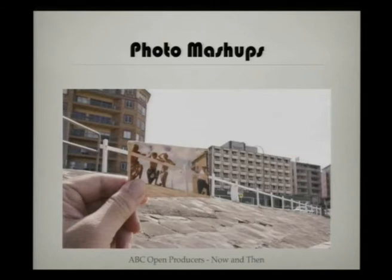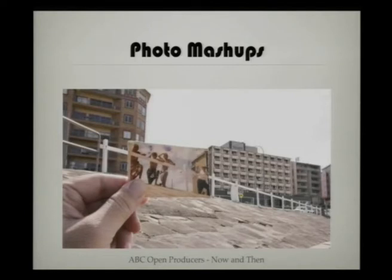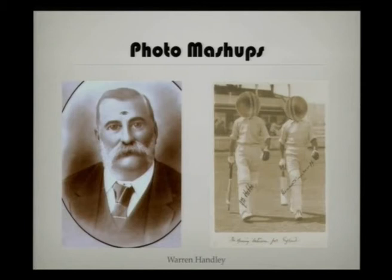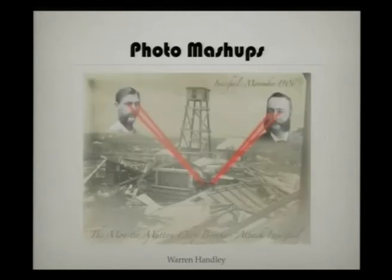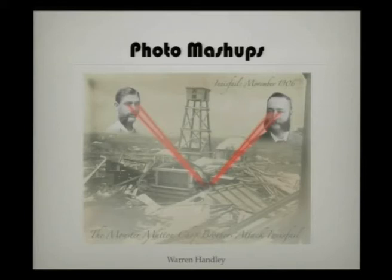Here are a couple of examples of photo mashups just to give you an idea of what they actually are. This one was taken from the ABC Open Producers project called Now and Then — it's basically mixing an image from the present with an image from the past. I think it's really lovely, like looking through a window into the past of these guys hanging out looking out to sea. There are also some great ones by Warren Hanley, who'll be running a workshop in May. He's mashed up a few different images — I love the one with the cricketers, the cricket heads. Another one is called 'The monster mutton chop brothers attack Innisfail.' So that's just an example of the fun you can have, and you can go along to his workshop to make your own.